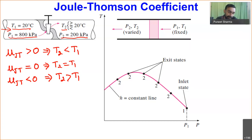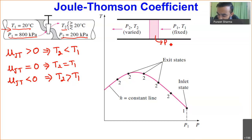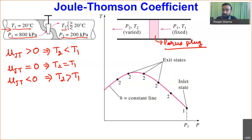Why for a particular value of Joule-Thompson coefficient does cooling, heating, or constant temperature occur? Let us try to understand. I have considered a pipe with a porous plug — a solid material with pores that allow fluid to pass through. Depending upon the thickness of the pore, we will have a decrease in pressure on the downstream side.